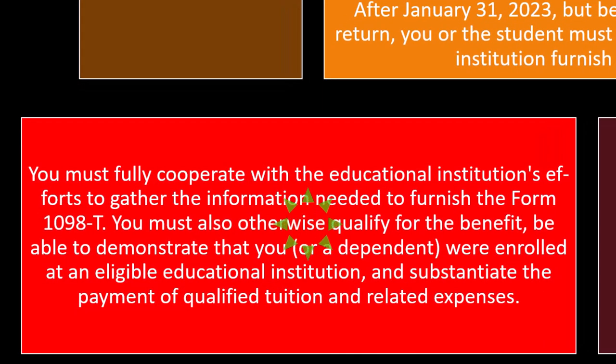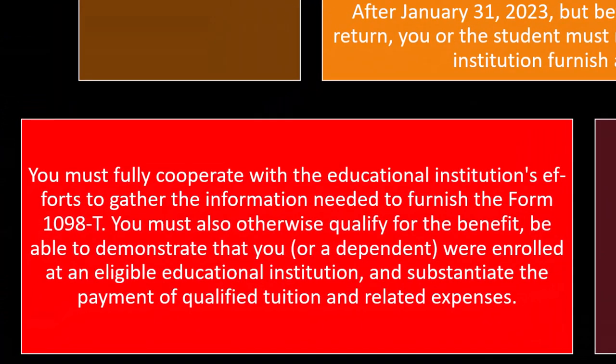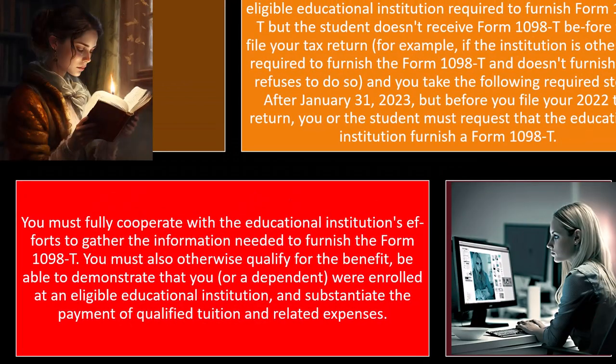You must fully cooperate with the educational institution's efforts to gather the information needed to furnish Form 1098-T. If they say they can't provide it because you didn't supply required information such as your full name or address, that's on you — you need to give them what they need. You must also otherwise qualify for the benefit, be able to demonstrate that you or a dependent were enrolled at an eligible educational institution, and substantiate the payment of qualified tuition and related expenses.